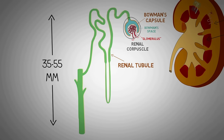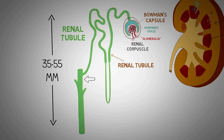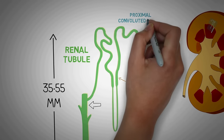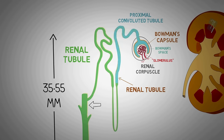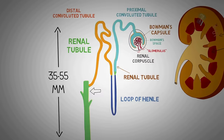The other end of the nephron is known as the renal tubule — the word tubule just means a small tube. The renal tubule is a long and folded tube-like structure that emerges from the Bowman's capsule and ends into the duct system of the kidney. The tubule is divided into three main parts: the proximal convoluted tubule shown in light blue, the loop of Henle shown in dark blue, and the distal convoluted tubule shown in orange.